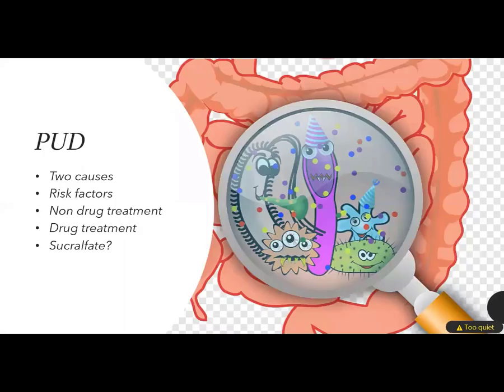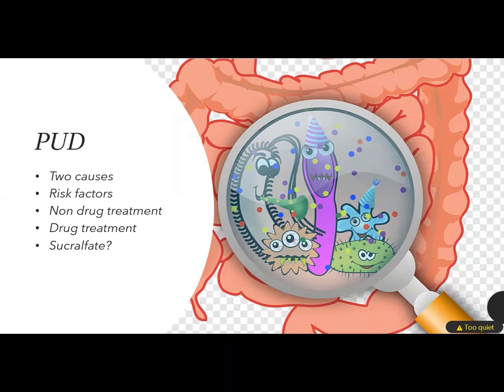For peptic ulcer disease and dyspepsia, drug treatment follows the same approach. Review the patient after six to eight months to see if it's working out for them. Sucralfate is one we haven't really looked at — it may act by protecting the mucosa and is composed of aluminum and sucrose.